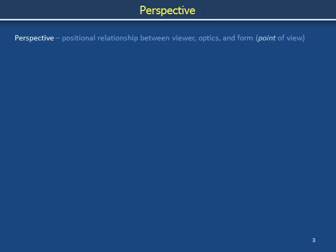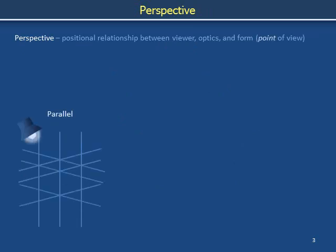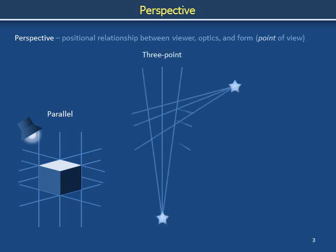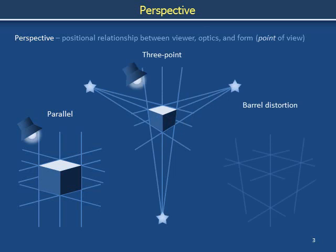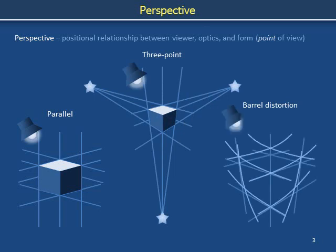Perspective is the positional relationship between the viewer, optics, and a form of interest — it's the point of view. A cube viewed at great distance can be represented using three sets of parallel lines. Forcing these sets of lines to intersect at three so-called vanishing points indicates finite distance between viewer and cube. Curving otherwise straight guidelines can imitate the effect of optical distortion.